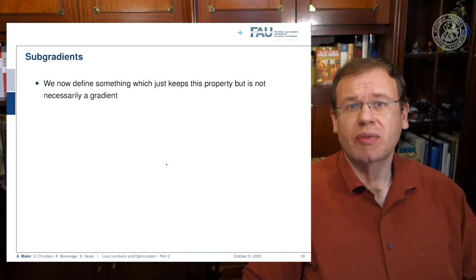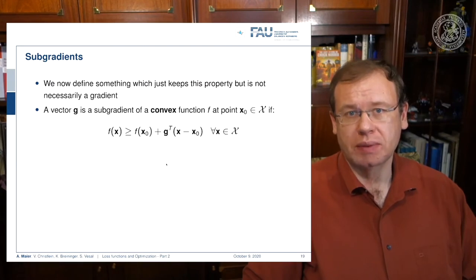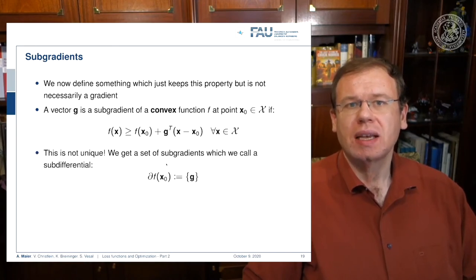So let's expand now on the gradient and go into the direction of subgradients. In subgradients, we define something which keeps this property but is not necessarily a gradient. So a vector g is a subgradient of a convex function f of x zero if we have the same property. If we follow the subgradient direction, multiply it with the difference between x and x zero, then we always have a lower bound. The nice thing with this is that we essentially can relax the requirement of being able to compute a gradient.